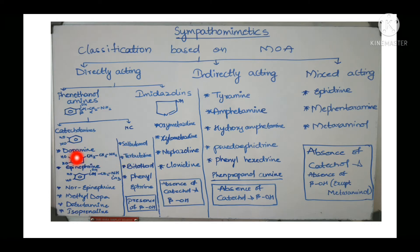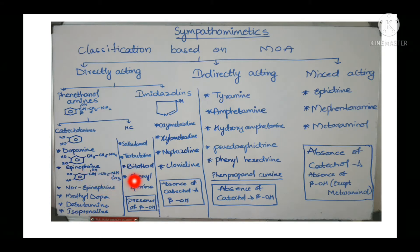Here we can see the structures of the main drugs. Dopamine contains a benzene catechol ring with CH₂CH₂NH₂. Epinephrine has a hydroxyl group on the beta carbon with CH₂NHCH₃. Norepinephrine lacks the methyl group — as the name suggests, removing the methyl group from epinephrine gives norepinephrine. Structures of remaining drugs will be shown in a linked clip.